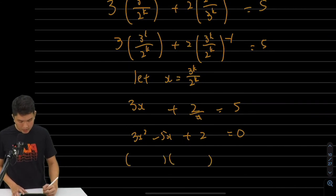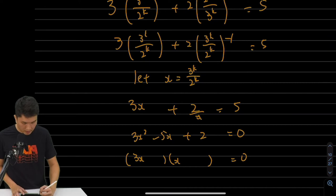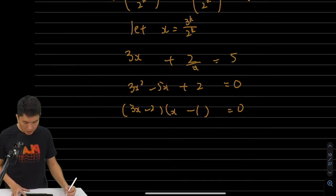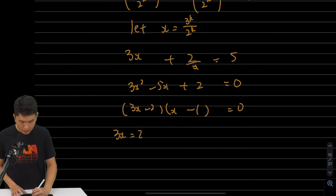Then you get, after factorizing, 3x and x. This is the minus 2 minus 1. So that means 3x equals to 2, or x equals to 1. So x equals to 2 thirds, or x equals to 1.